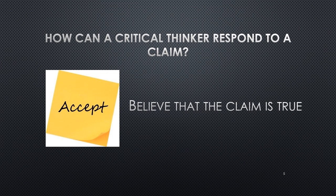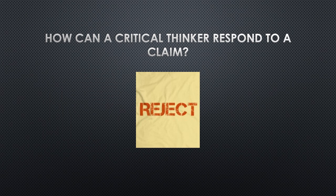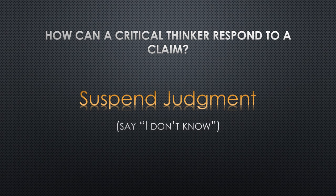There are three ways that a critical thinker can respond to a claim. The first is to accept the claim — the critical thinker believes that the claim is true. Alternatively, we can reject a claim — the critical thinker believes that the claim is false. But sometimes we do not have enough information to either accept or reject the claim. In such instances, we can suspend judgment. In suspending judgment, the critical thinker does not think the claim is true, nor does the critical thinker think the claim is false. Instead, the critical thinker says, 'I don't know.' This is a great opportunity to do more research in order to arrive at either accepting or rejecting the claim.